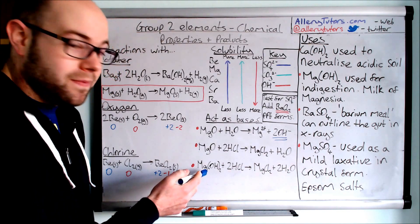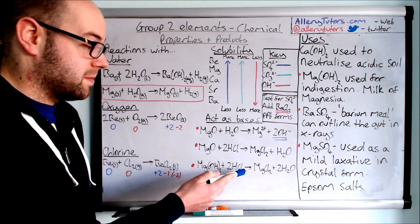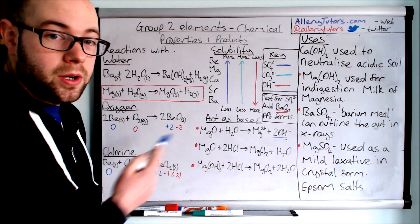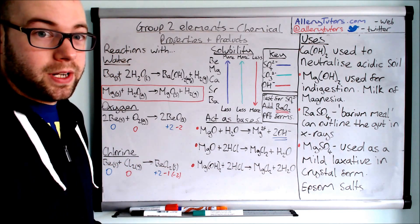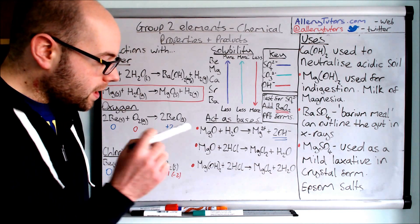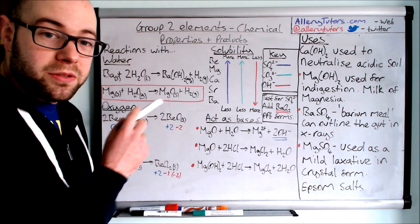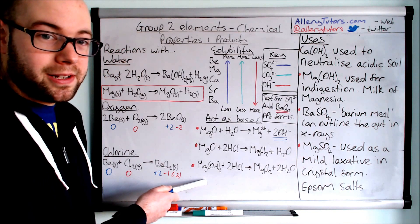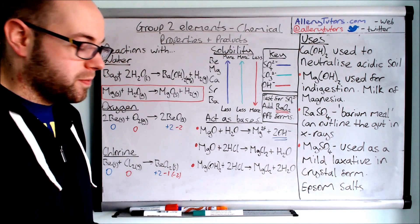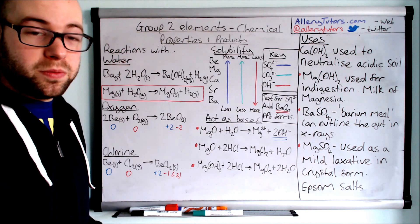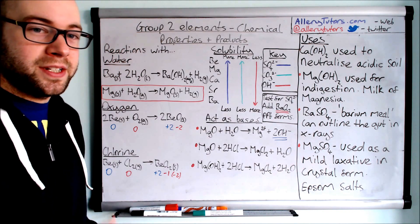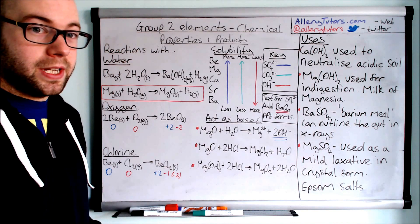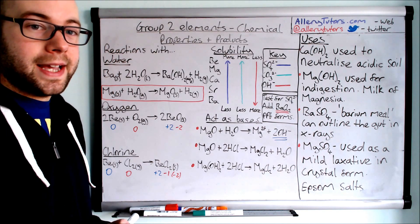We can do the same for hydroxides — acid plus base gives salt plus water, for example magnesium chloride plus water. And with carbonates: acid plus a group 2 metal carbonate also forms a salt plus water, but crucially also produces carbon dioxide gas. We can take that gas, bubble it through limewater, and if the limewater turns cloudy, we know we've formed carbon dioxide.